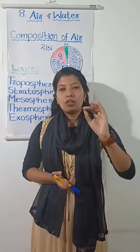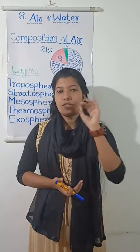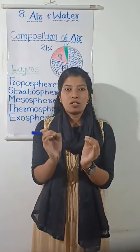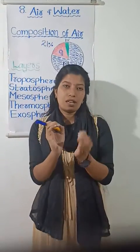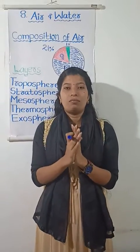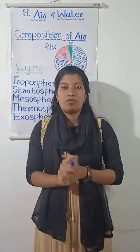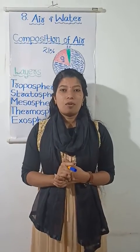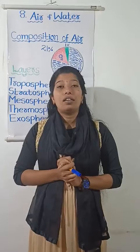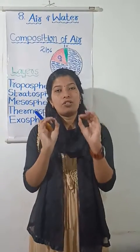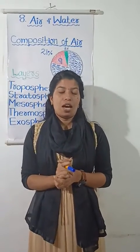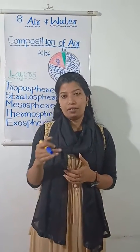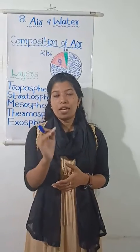Now, let us move on to another gas — the major constituent of the atmosphere — and that is nitrogen. Nitrogen is the most abundant element in our planet's atmosphere, meaning our earth's atmosphere. 78% of the atmosphere is comprised of nitrogen, and it is also important to plant life. There is one percent of other gases like argon, hydrogen, helium, carbon dioxide, etc.